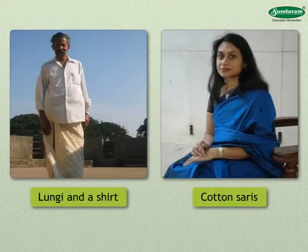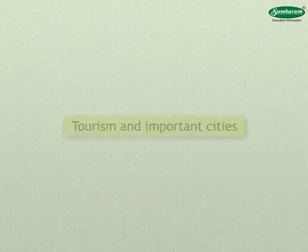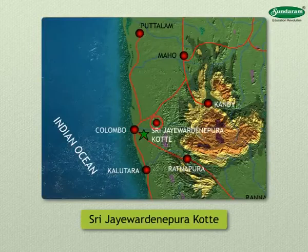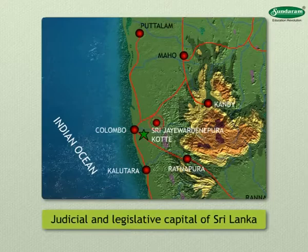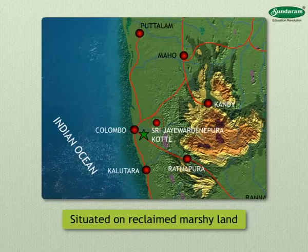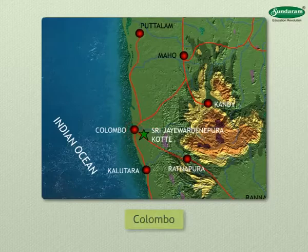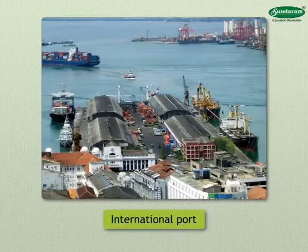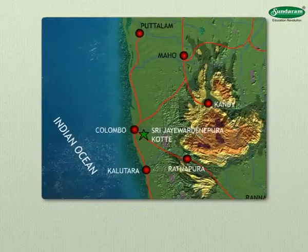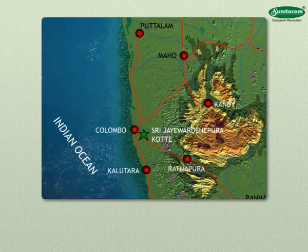Cricket is a popular sport. Sri Jayawardenepura Kotte is the newly set up judicial and legislative capital of Sri Lanka, situated on reclaimed marshy land near Colombo. Colombo is the commercial and administrative capital of Sri Lanka and an international port on the western coast. It is an artificial port, and almost all cities are connected to Colombo by various transport routes. There is an international airport here, making it an important trading center.